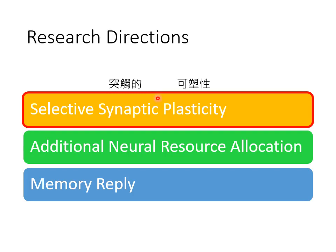Synaptic means synapse, which is the connection between nerves — in our brain, this is called a synapse. What about plasticity? It means malleability. In a nutshell, what this method does is that we only let certain neurons in the neural network, or some connections between neurons, to be malleable. Selective means only part of the connection is malleable; some links must be solidified and must not be altered.